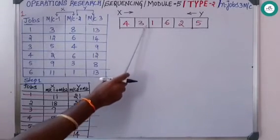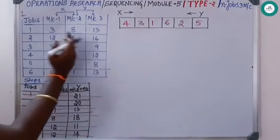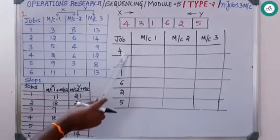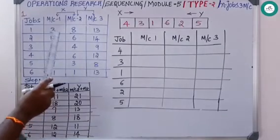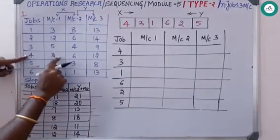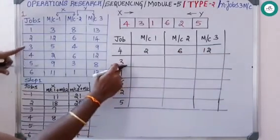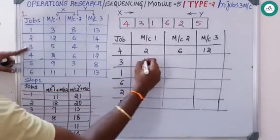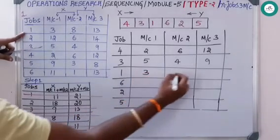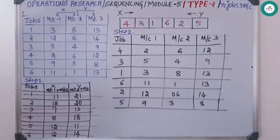After finding the best sequence, write the jobs in order 4, 3, 1, 6, 2, 5 with the same three machines. Copy down the respective processing times for each job: job 4 is 2, 6, 12; job 3 is 5, 4, 9; job 1 is 3, 8, 13. This completes Step 2.